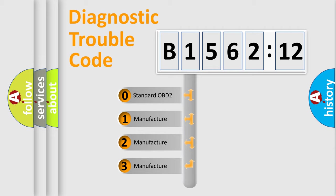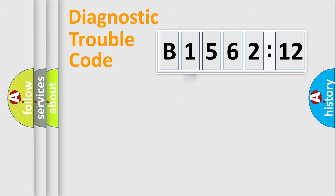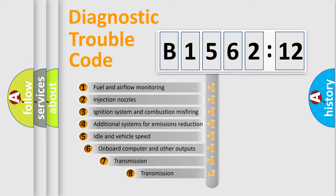If the second character is expressed as zero, it is a standardized error. In the case of numbers 1, 2, 3, it is a manufacturer-specific expression of the car-specific error.